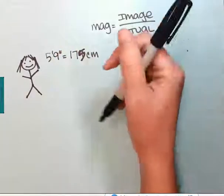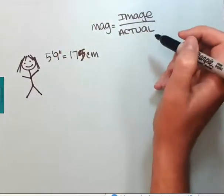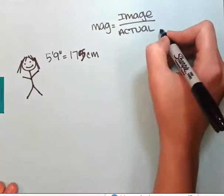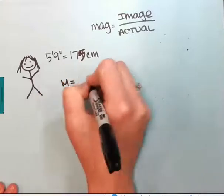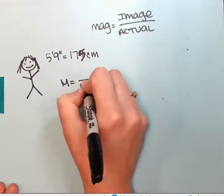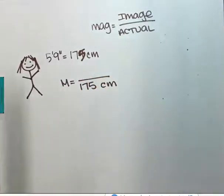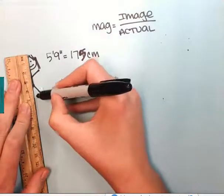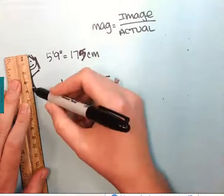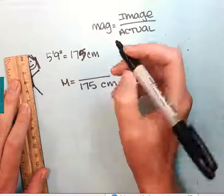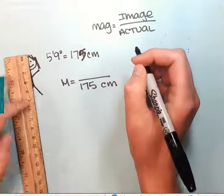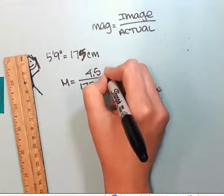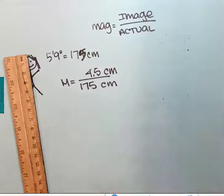If I want to know the magnification of this image, I'm going to plug those values into my formula. 175 is going to be my actual. I know the actual is 175 centimeters. I'll use my handy dandy ruler to determine what I'm working with, so that looks to be about 4.5 centimeters or 45 millimeters.